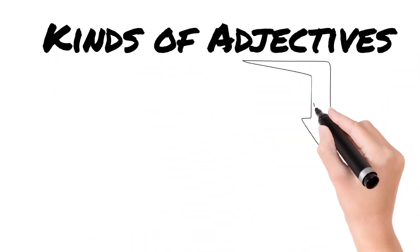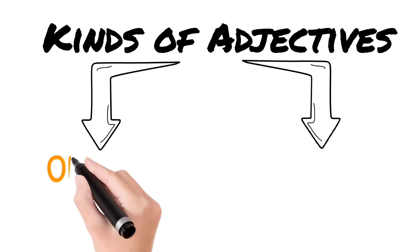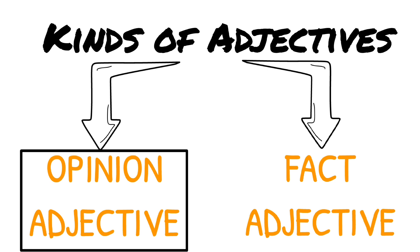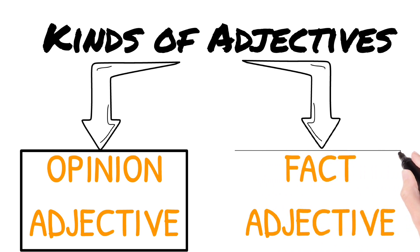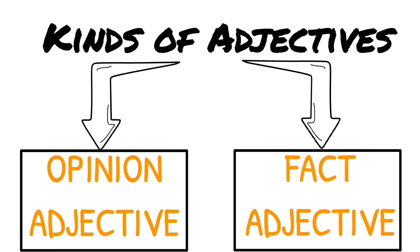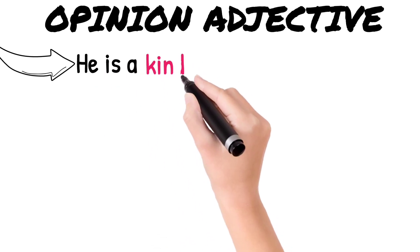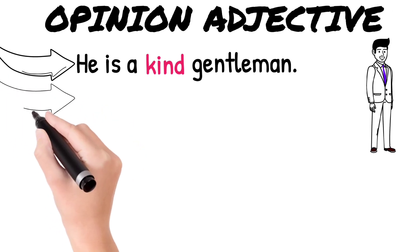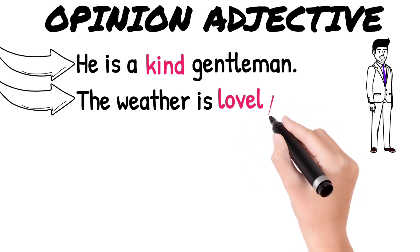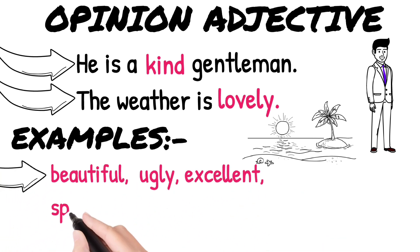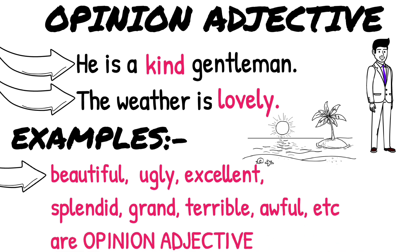Secondly, we have to learn the kinds of adjectives. There are two kinds: Opinion adjectives and Fact adjectives. Opinion adjectives express someone's personal view or opinion about a person or thing. For example: 'He is a kind gentleman' — 'kind' is an opinion adjective. 'The weather is lovely' — 'lovely' is an opinion adjective. Other opinion adjectives include: beautiful, ugly, excellent, splendid, grand, terrible, awful, etc.